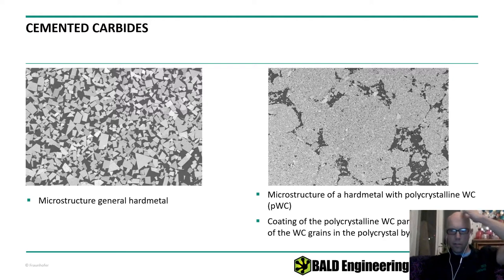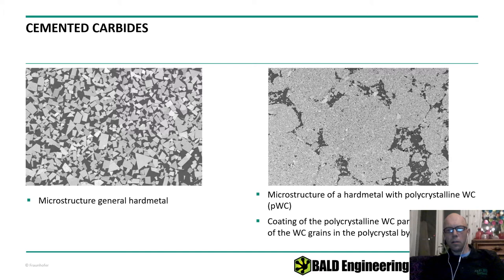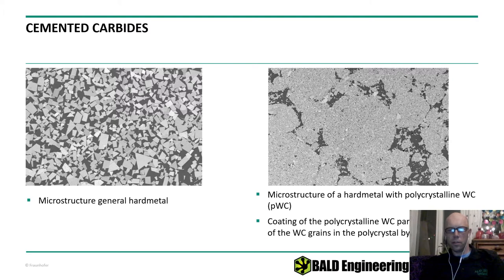What we do is change the wetting function of the tungsten carbide surface, which is beneficial for the cobalt during the sintering process. It has two functions: it reduces the risk of cobalt diffusing into the tungsten carbide — which reduces hardness — and also improves the wetting of the surface.